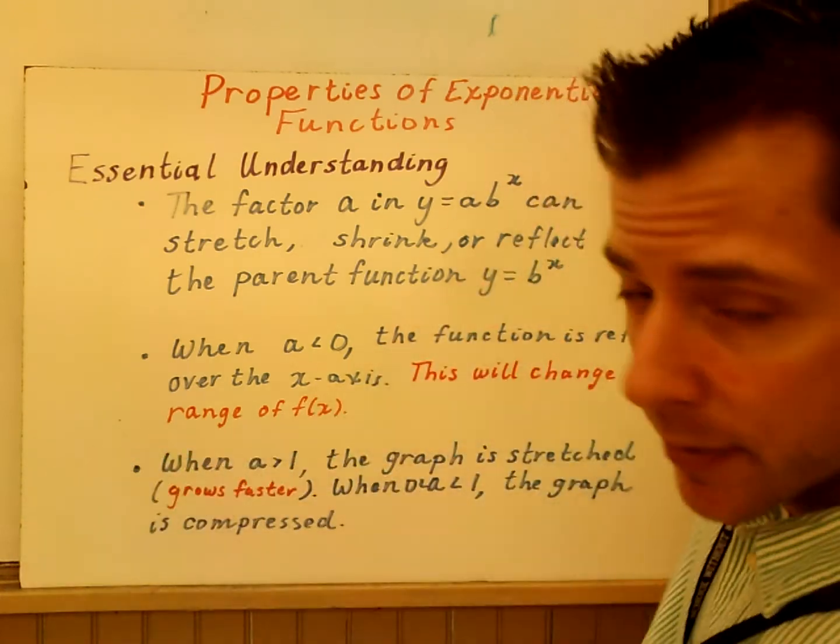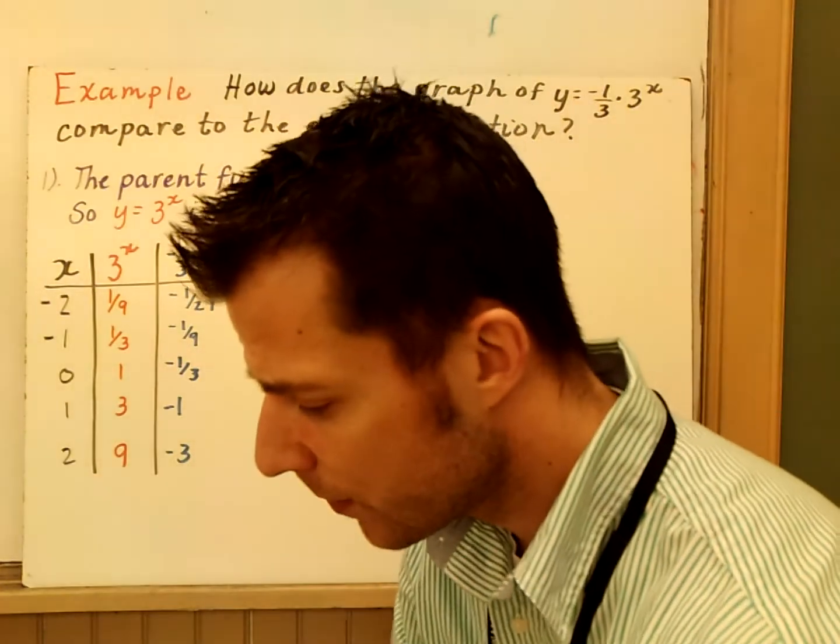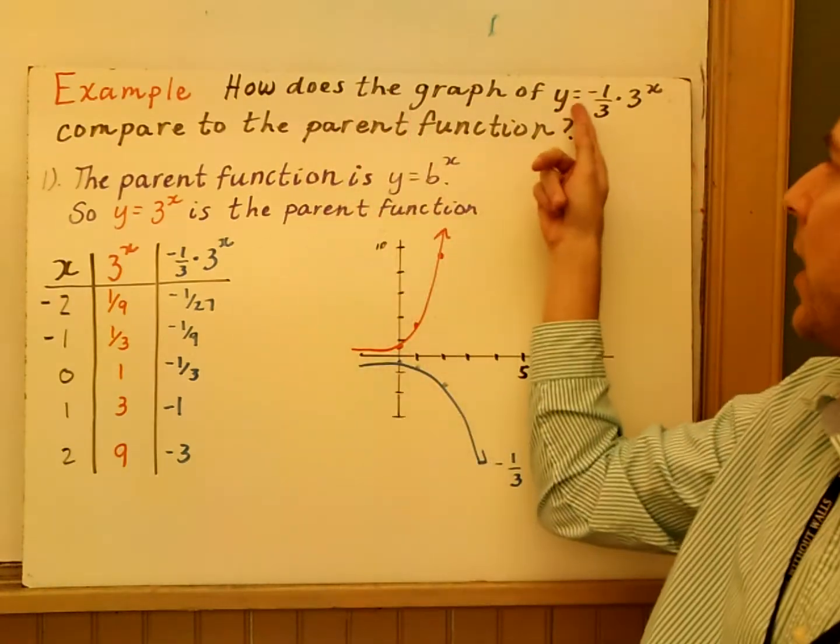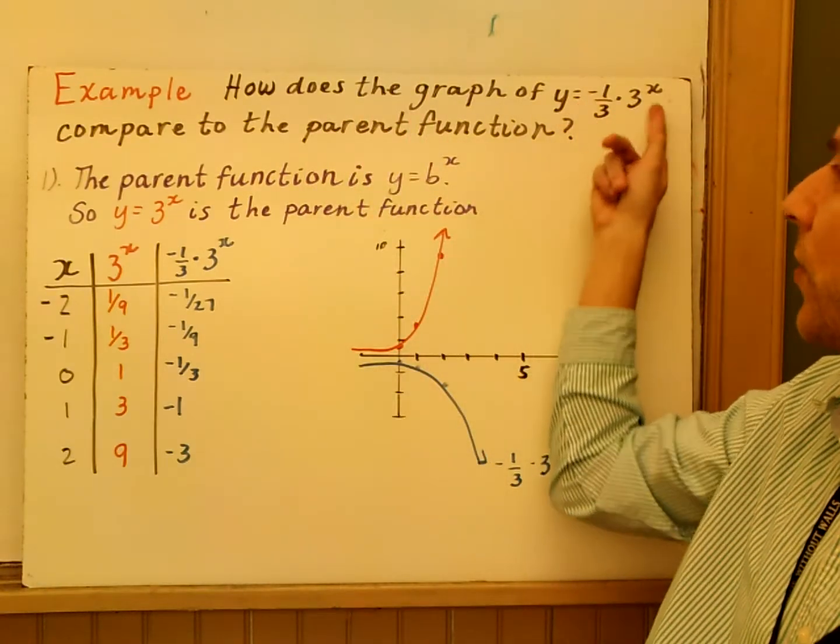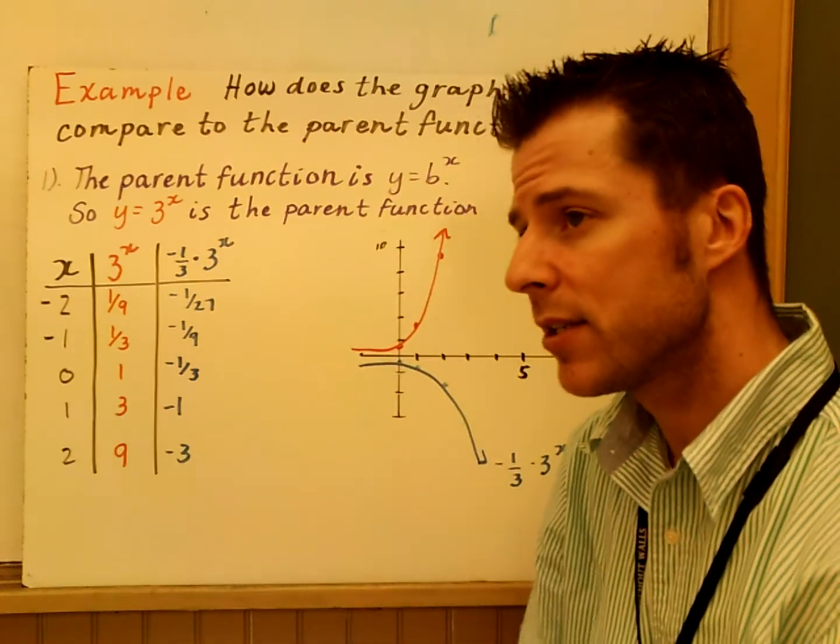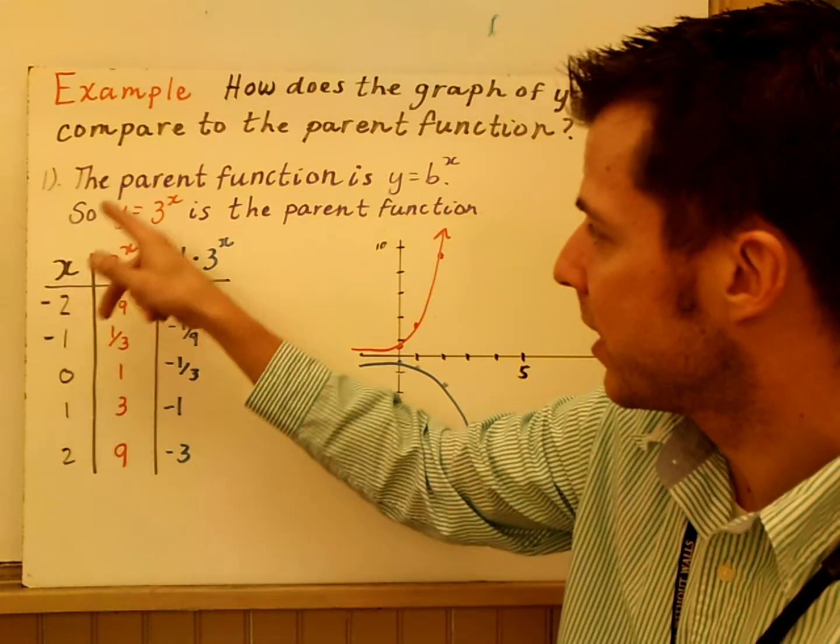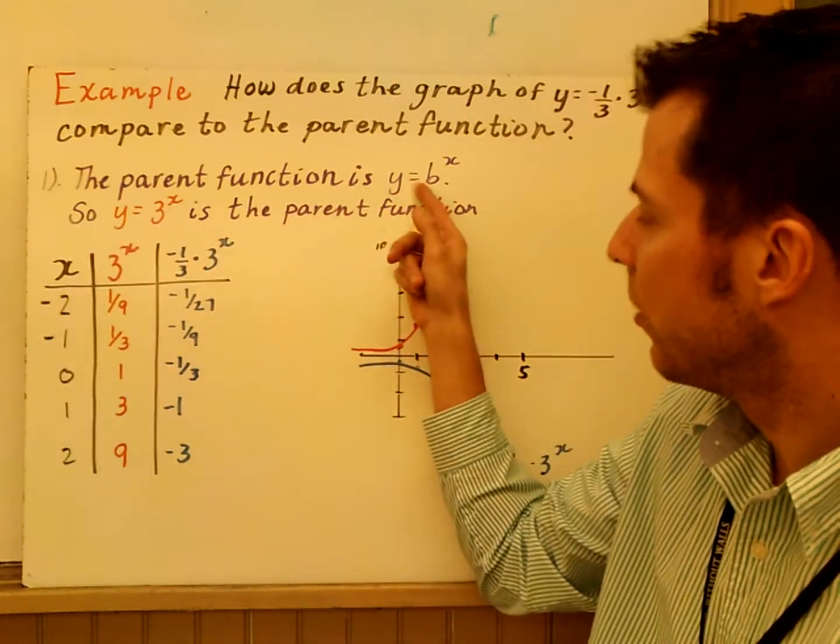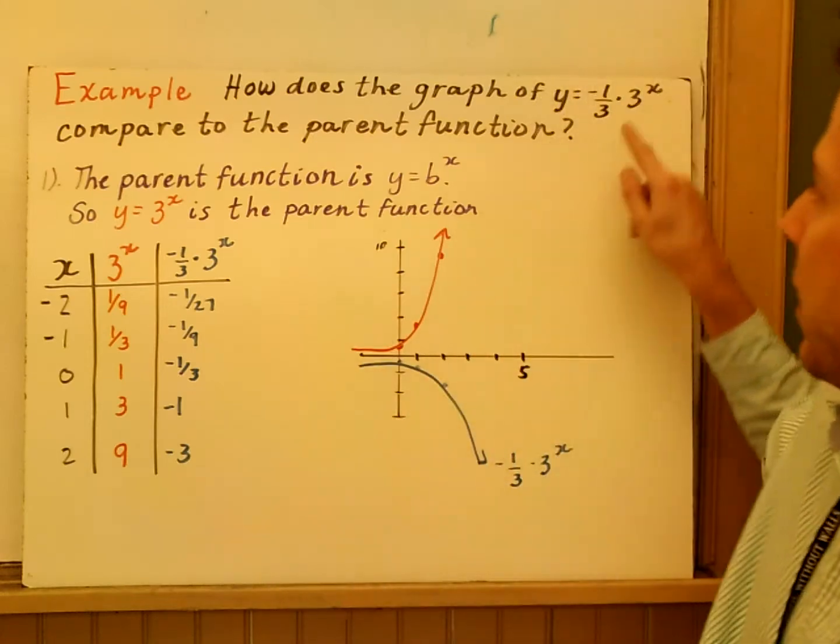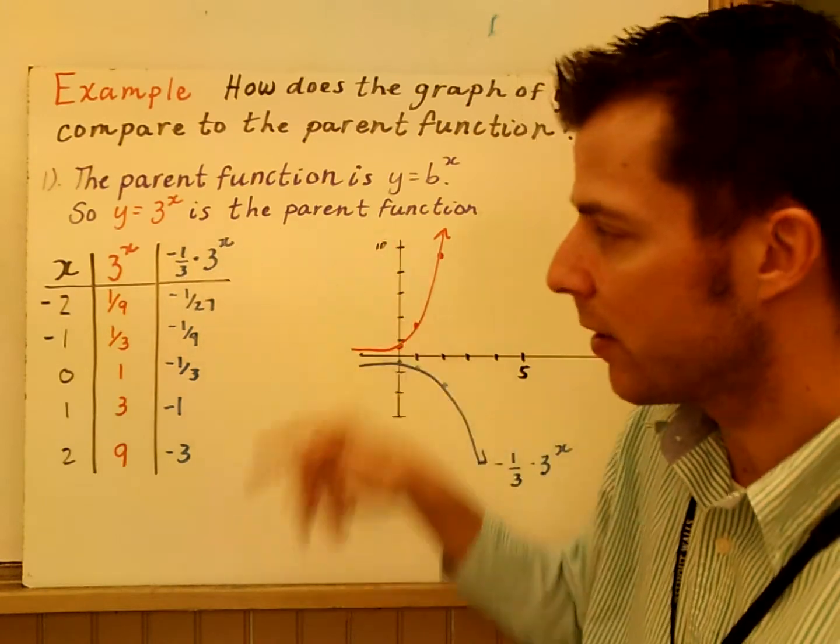Let's look at some examples of these functions. In number 1, the example asks: how does the graph of Y equals negative 1 third times 3 to the X compare to the parent function? When I look at this, what is the parent function? Step number 1, I tell myself, what is the parent function? We know it's Y equals B to the X. So really, you have to identify B. In this case, it's 3. So Y equals 3 to the X is the parent function.